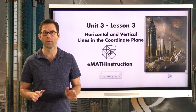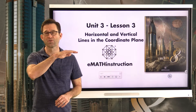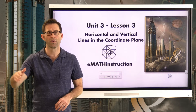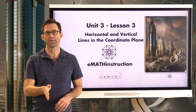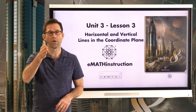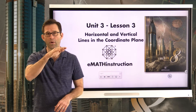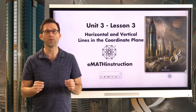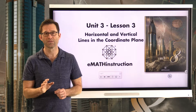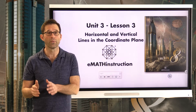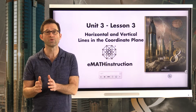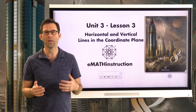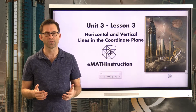Horizontal and vertical lines are extremely important. Horizontal lines are lines that strictly go left and right — there's no slanting uphill or downhill. Vertical lines are lines that strictly go up and down with no kind of slanting left and right. Today what we'd like to do is really look at how we can describe these lines with equations and likewise how we can take equations of these lines and know exactly what we should graph.